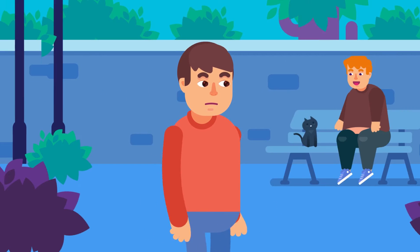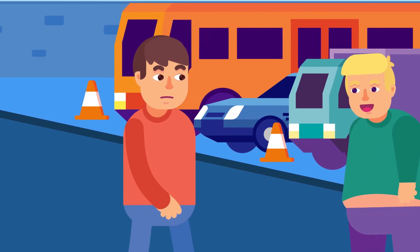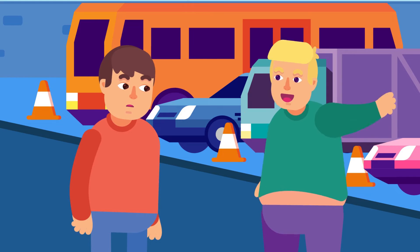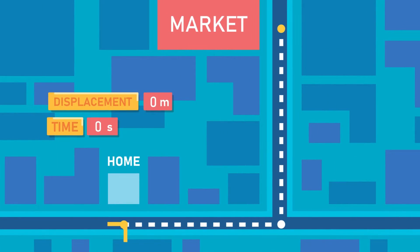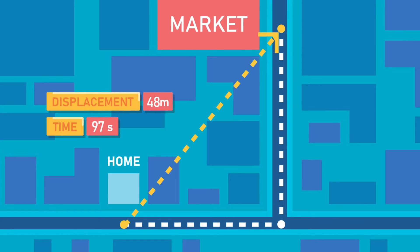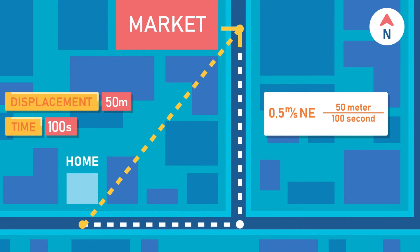Velocity, on the other hand, is defined as the rate at which an object changes its position, and consists of both magnitude and direction. It can be calculated by measuring the rate at which an object is displaced in a particular time period: velocity equals displacement over time. In our example, this yields 0.5 meters per second northeast. Don't forget to write the direction, as velocity is a vector quantity.